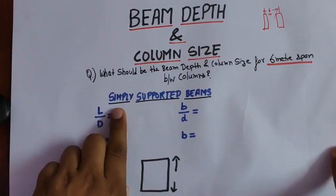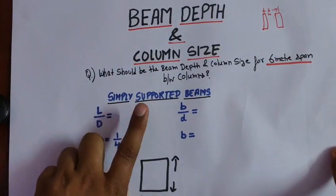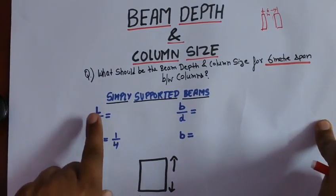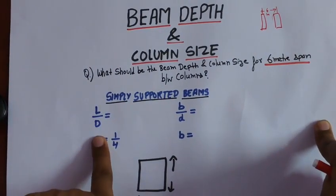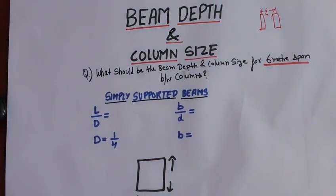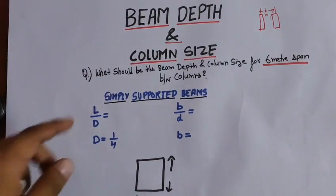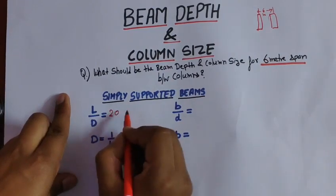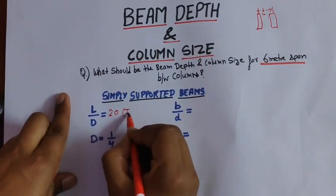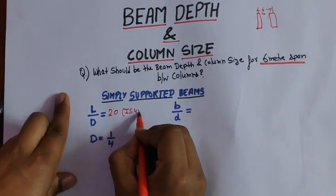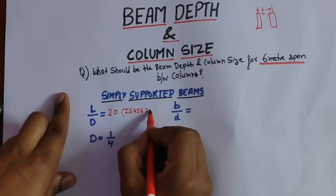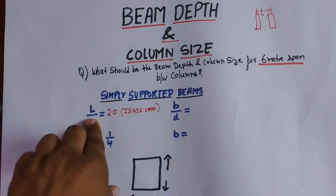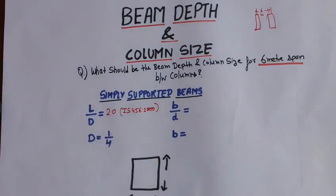We are considering the case for a simply supported beam. For a simply supported beam, the length to overall depth ratio is calculated. According to IS 456:2000, the length to overall depth ratio is 20.